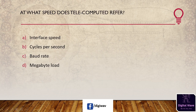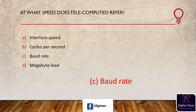Next question: at what speed does telecommunication refer? Options are: interface speed, cycle per second, baud rate, megabyte load. The answer is baud rate. In telecommunications, baud rate is a specific unit of speed rate. It is one of the significant functions that determines the speed of communication over a data channel.